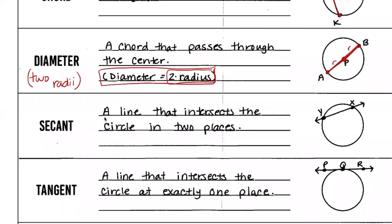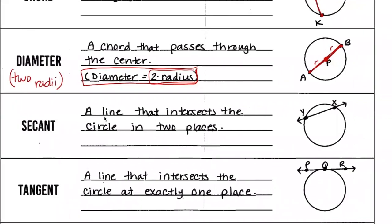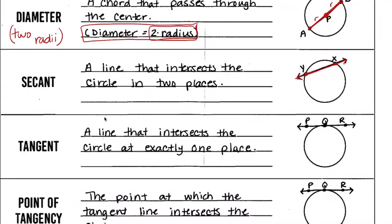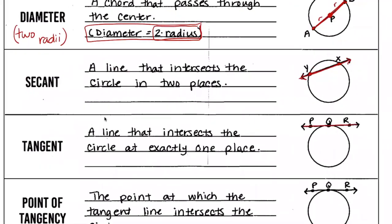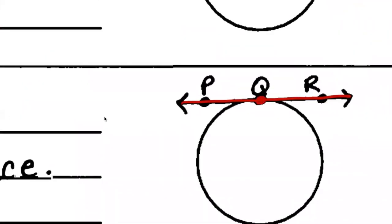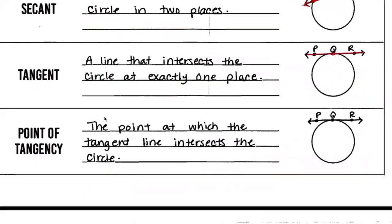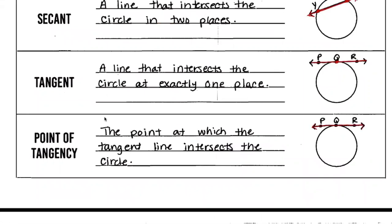A secant is a line that intersects the circle in two places — it goes beyond the circle, cutting through at two points. We can also have a line that crosses the circle but only touches it at one point — that's called a tangent. This line touches the circle at point Q and only touches it once; it doesn't go through it. The point where the tangent touches the circle is called the point of tangency. So line PR touches the circle at Q, making Q the point of tangency.